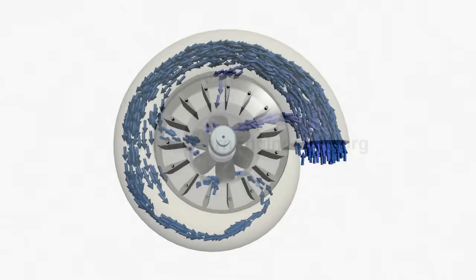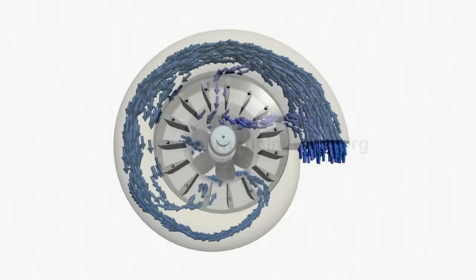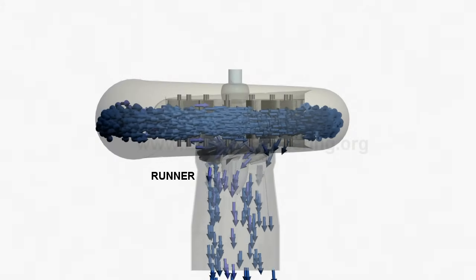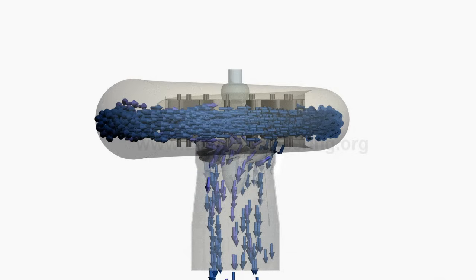Water after crossing the guide vanes passes over the runner. Finally it leaves through a draft tube.